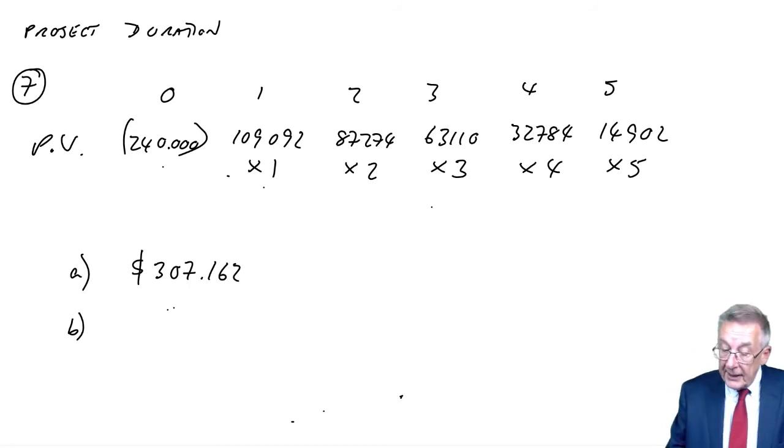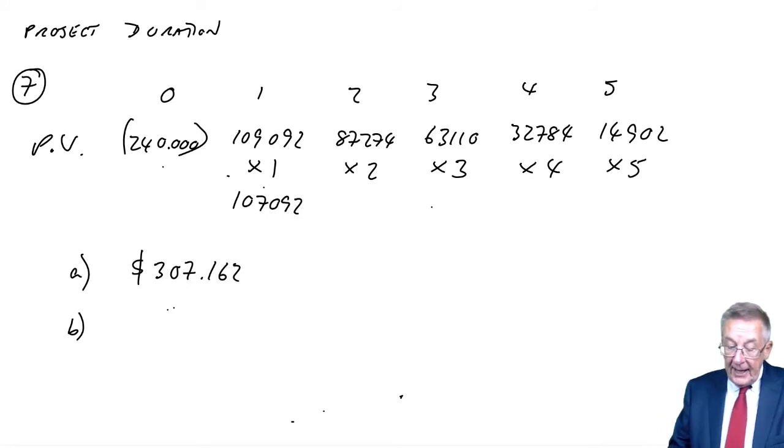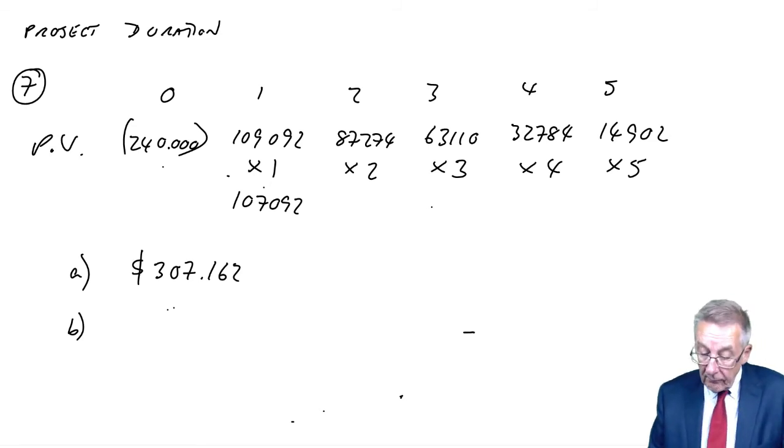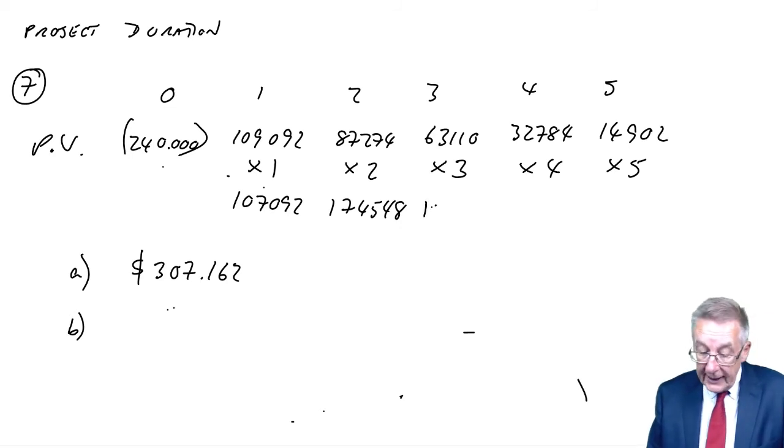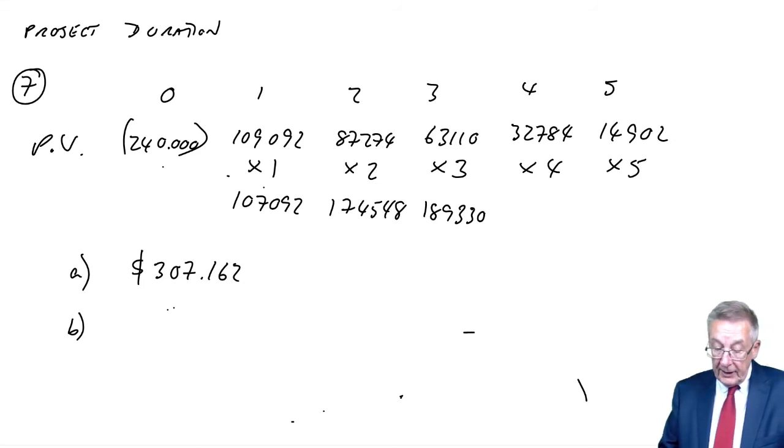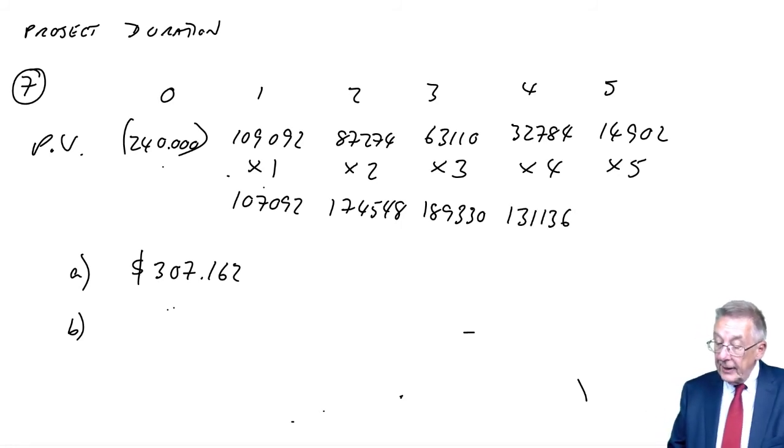We're getting 109 out of 307 in one year, 87 out of 307 in two years. But multiply them and add them up. So, 109,092 times 1, 87,274 times 2, 174,548, 63,110 times 3, 189,330, 32,784 times 4, 131,136. And finally, 14,902 times 5.